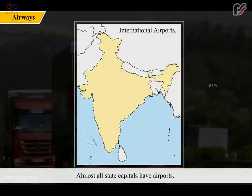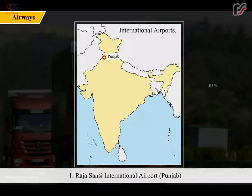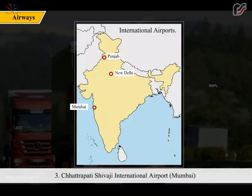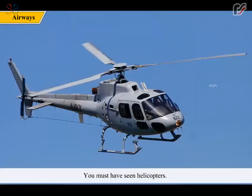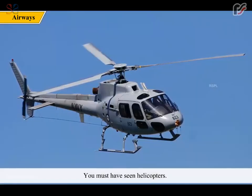Almost all state capitals have airports. We have the following major international airports: 1. Rajasansi International Airport, Punjab; 2. Indira Gandhi International Airport, New Delhi; 3. Chhatrapati Shivaji International Airport, Mumbai; 4. Chennai International Airport, Chennai; 5. Netaji Subhash Chandra Bose International Airport, Kolkata.